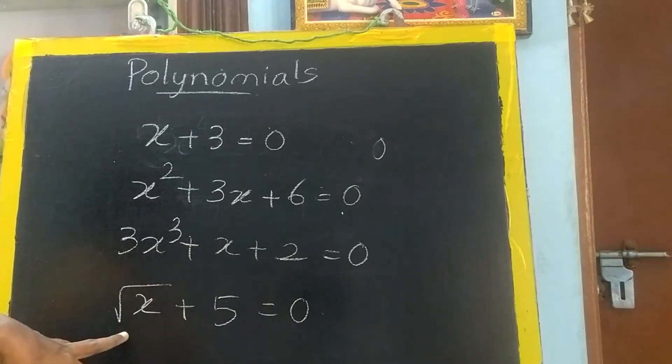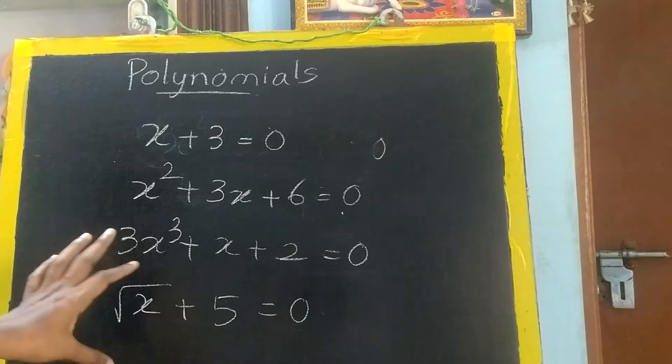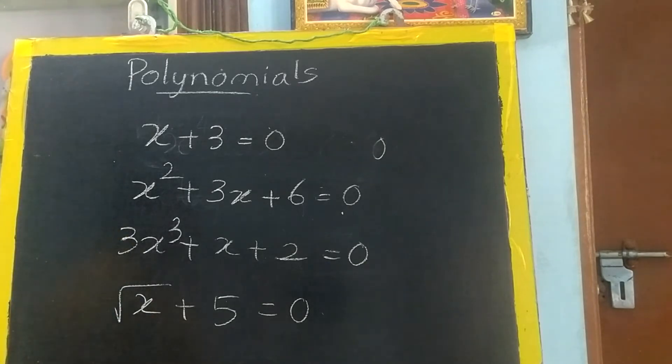Now you can see what is the power of root x, it's x power 1/2. This is also a polynomial. So if the power is 1, 2, 3 like this, real numbers, yes of course it is a polynomial. But in case the power is negative, it is not a polynomial.